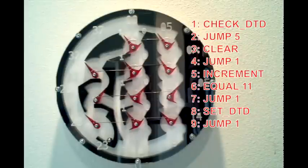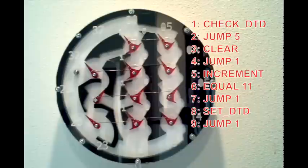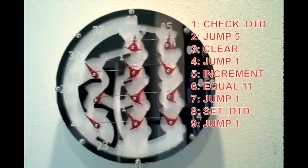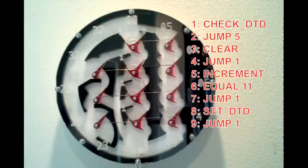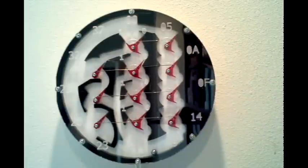Since the DTD is true this time, the ball will be on track B and pass the check by moving over to register B. Register B will clear itself to zero and copy the data via the bus wires to register A.